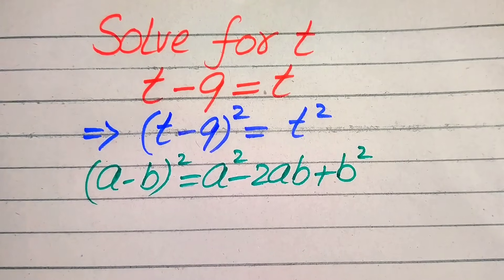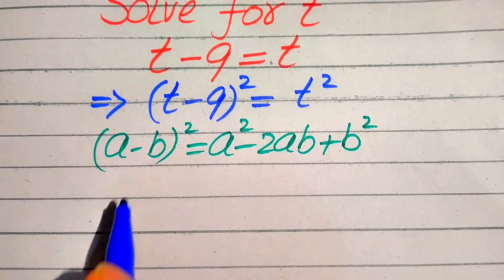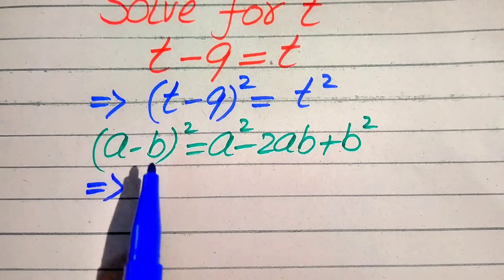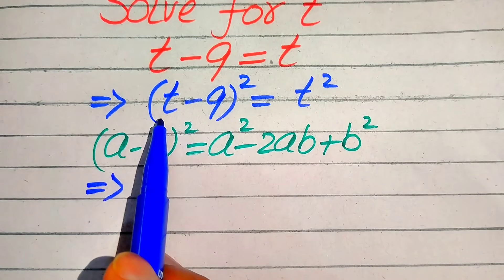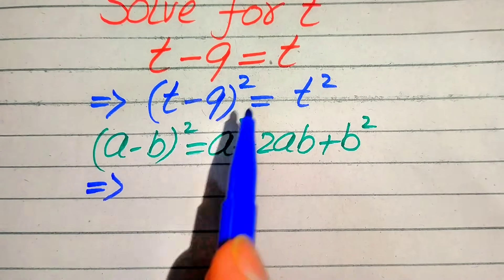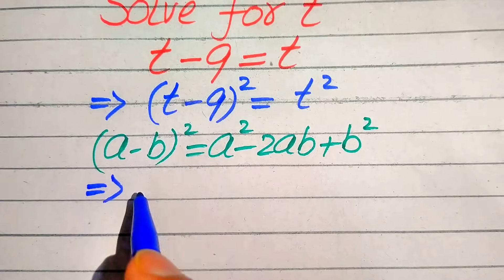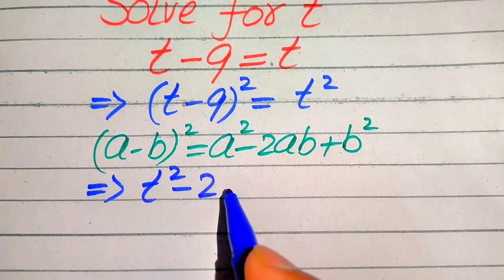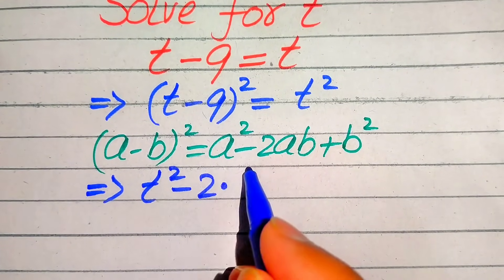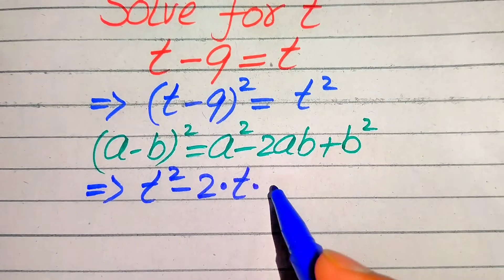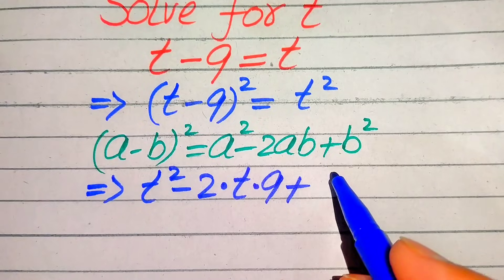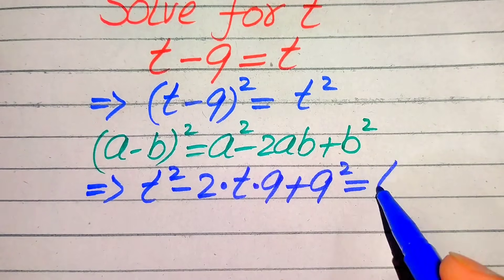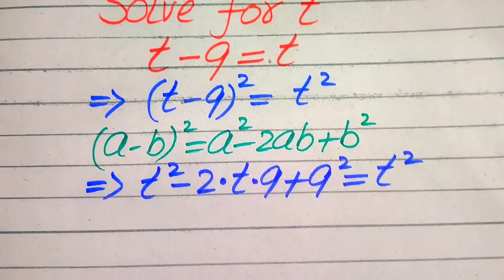According to this algebraic formula, we expand the left hand side of the above equation. Here our a is equals to t and b is equals to 9. So we write the equation as t square minus 2 times t times 9 plus 9 square is equals to t square.